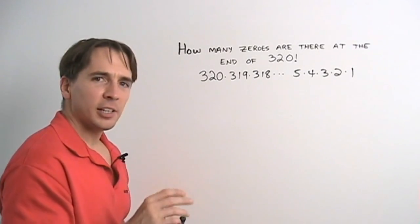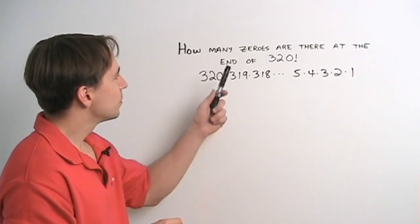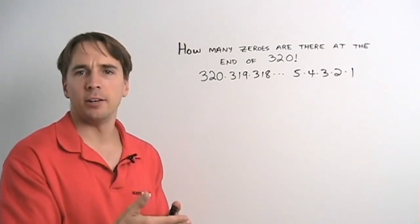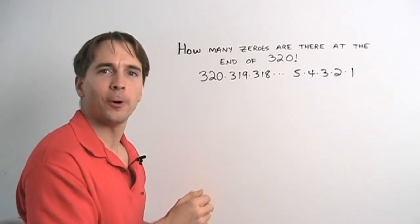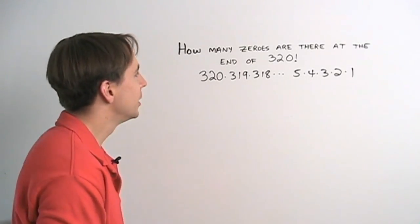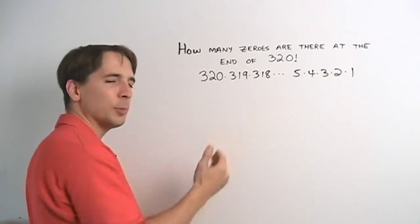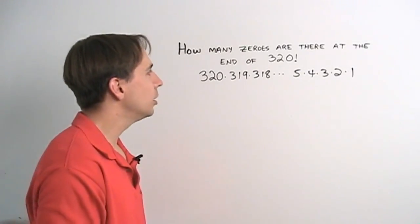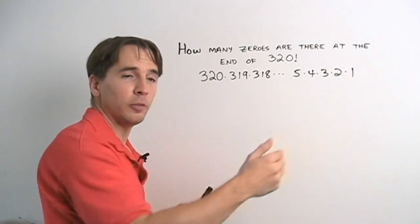So we're going to have to think a little bit harder about this. Zeros at the end of numbers, how does that happen? Well, that happens when you multiply by 10. 14 times 10, you get 140, zero at the end. So we think, well, let's just count up the multiples of 10. There's 10, there's 20, 30, 40, and up to 320. So obviously there are 32 of these multiples of 10.